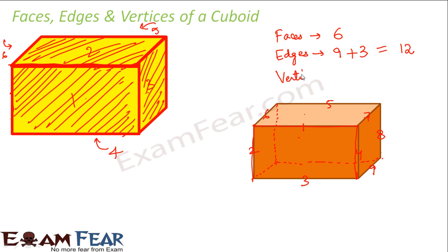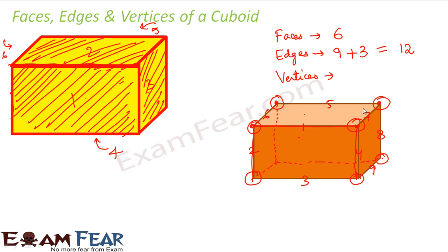Now, what about vertices? A vertex is a point where the sides meet, and here the definition remains the same. Consider this point — this is a point where all these sides meet. Similarly, this is a point where all the sides meet. Wherever you see a point where sides are meeting, that is an example of a vertex. From the front view, 7 vertices are visible. But there is also a vertex not visible from the front — so there are a total of 8 vertices.